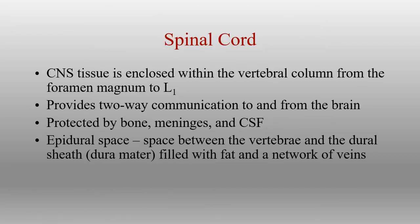The spinal cord runs all the way from the foramen magnum down to about L1-L2 — typically somewhere in that area depending on the length of the torso. It ends the actual solid cord at about L1. The spinal cord's job is to send information up towards the brain and send information down from the brain — a two-way process. Sensory information goes up towards the brain; motor information comes down from the brain to the eventual spinal nerves that exit.